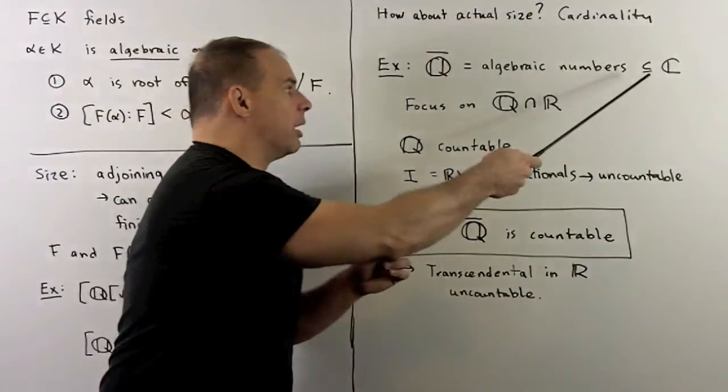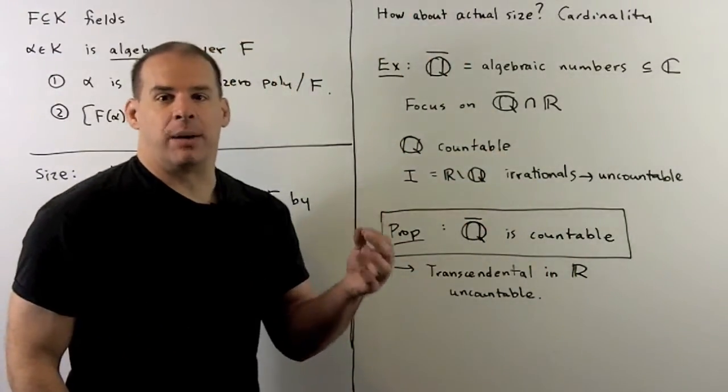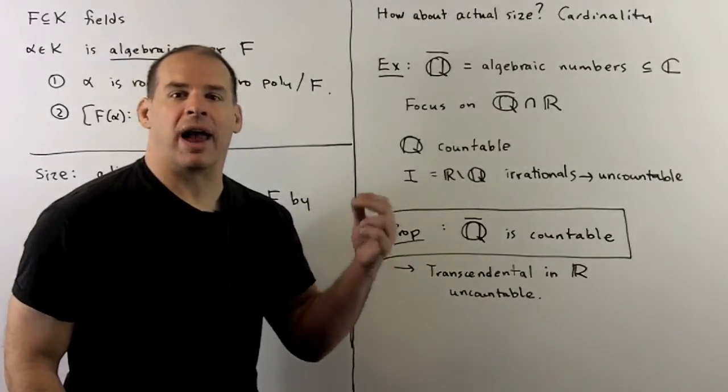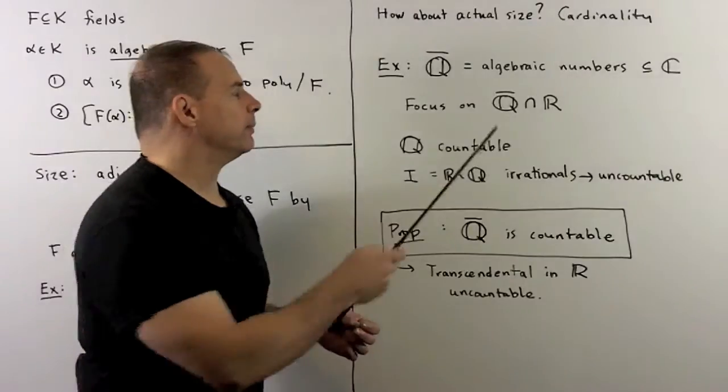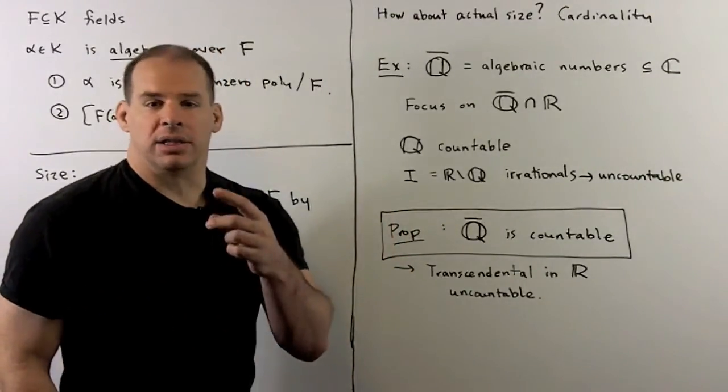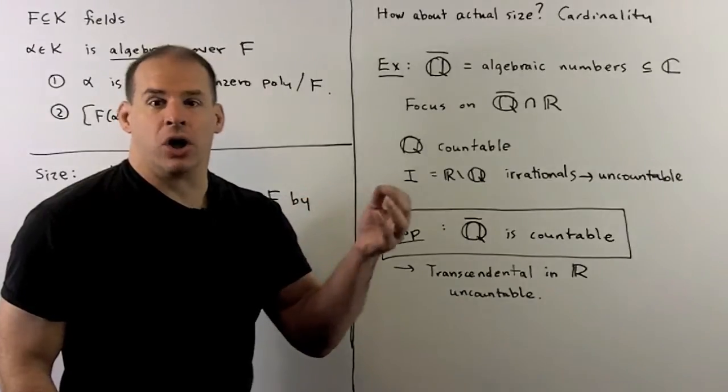So let's focus on complex numbers. Inside the complex numbers, we have the algebraic numbers. These are the complex numbers that are algebraic over the rationals. We'll denote these by Q bar.